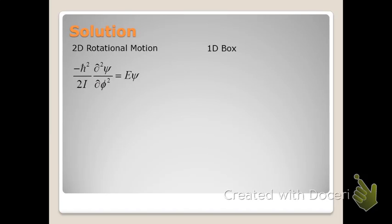Now we have the Schrödinger equation for two-dimensional rotational motion. We can solve this equation very quickly if we note the similarity between this equation and that for the one-dimensional particle in the box. The only difference is that instead of x, we have variable phi, and instead of m for mass, we have the moment of inertia. Mathematically, there is no difference between the two equations.